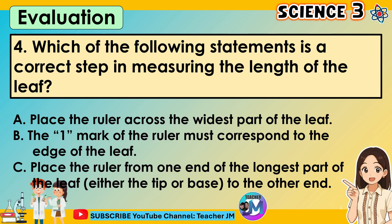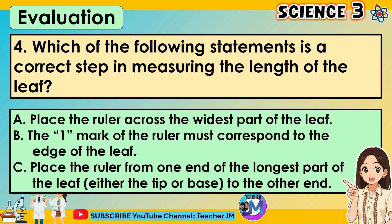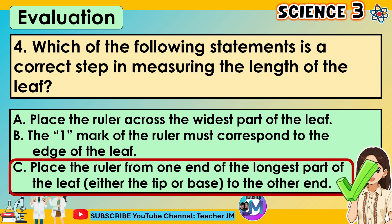Question 4: Which of the following statements is a correct step in measuring the length of the leaf? A. Place the ruler across the widest part of the leaf. B. The one mark of the ruler must correspond to the edge of the leaf. C. Place the ruler from one end of the longest part of the leaf, either the tip or base, to the other end. The correct answer is letter C.